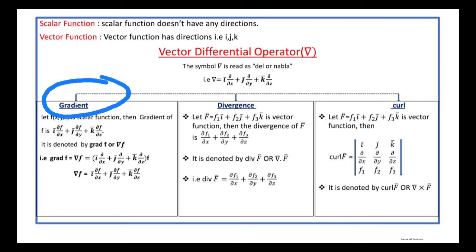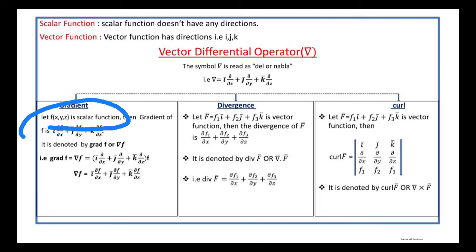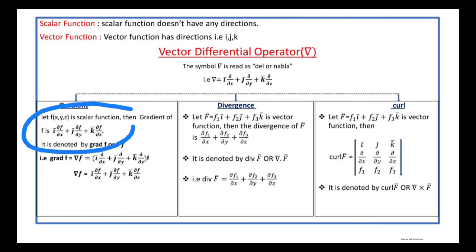Let us discuss gradient. Let f(x, y, z) be a scalar function. The gradient of f is: i-bar (∂f/∂x) plus j-bar (∂f/∂y) plus k-bar (∂f/∂z). This is the formula of gradient.